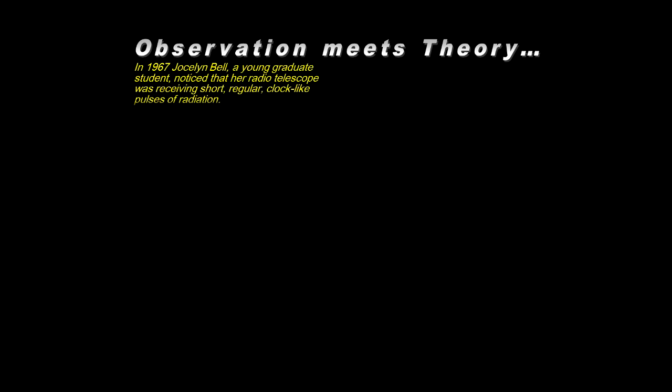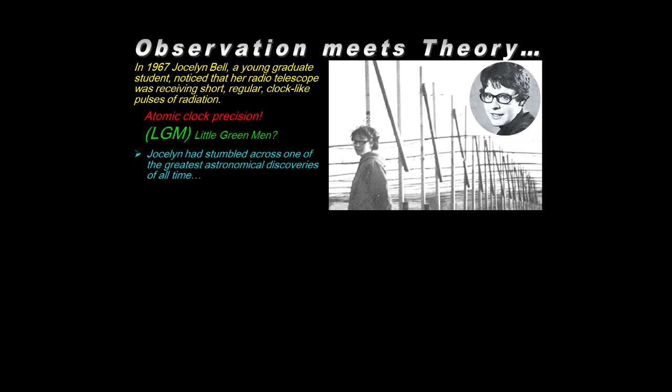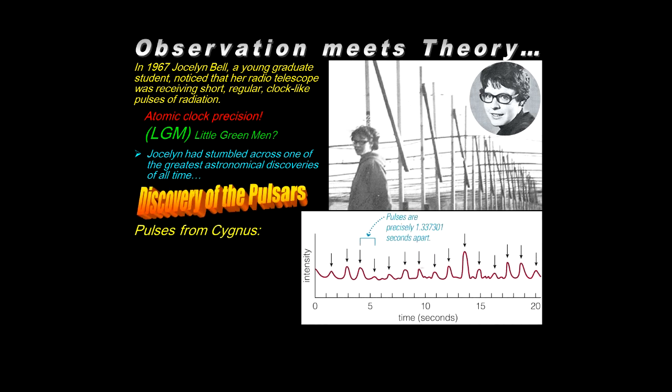In 1967, young graduate student Jocelyn Bell, using a radio telescope, was picking up regular clock-like signals with atomic clock precision. Now, the team associated with this didn't know what to make of it. Were these alien signals? Had they discovered alien life? Until they could sort this out, they termed the project LGM for Little Green Men. It's kind of cute. She had stumbled across an amazingly important discovery, namely, the pulsars.